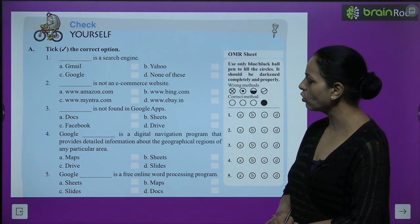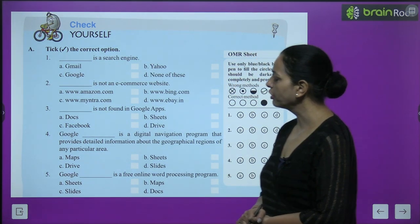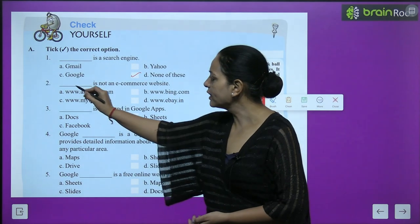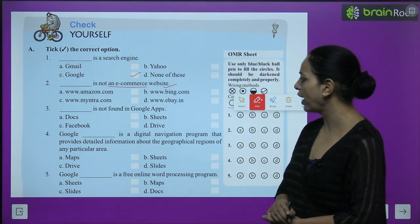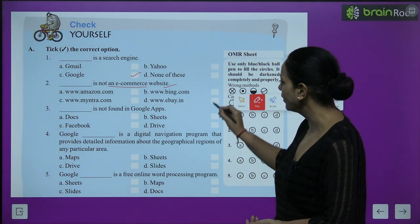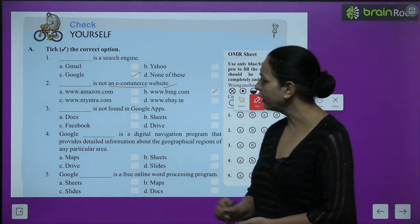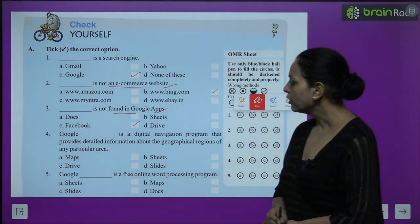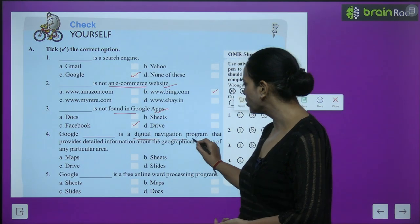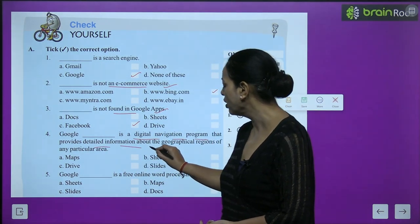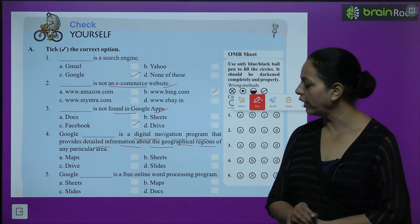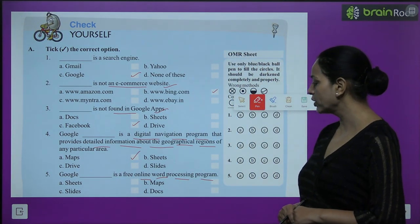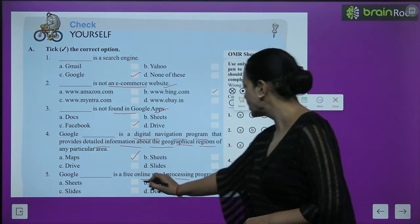Exercise — Check yourself. Take the correct option. First: which is a search engine? Answer: Google. Second: which is not an e-commerce website? Answer: Bing.com. Third: which is not found in Google Apps? Answer: Facebook. Fourth: Google Maps is a digital navigation program that provides detailed information about the geographical regions of any particular area. Fifth: Google Sheets is a free online word processing program — answer is A.